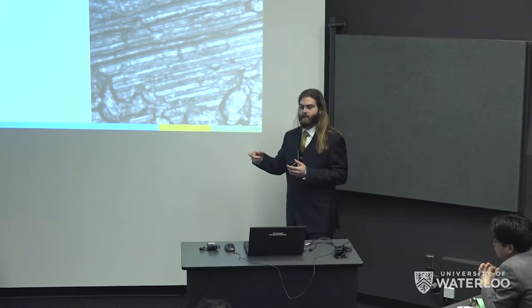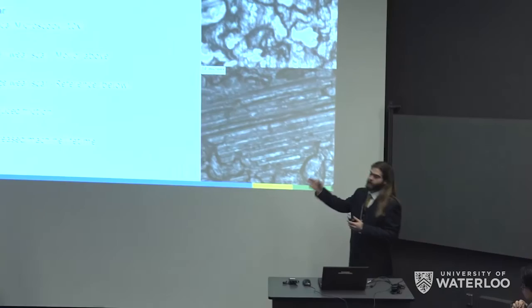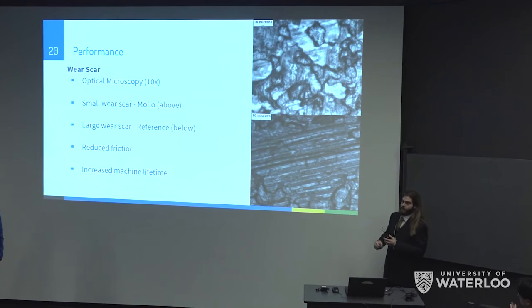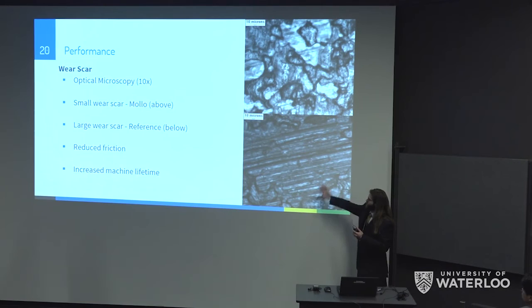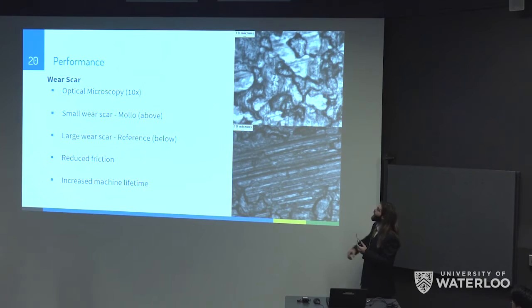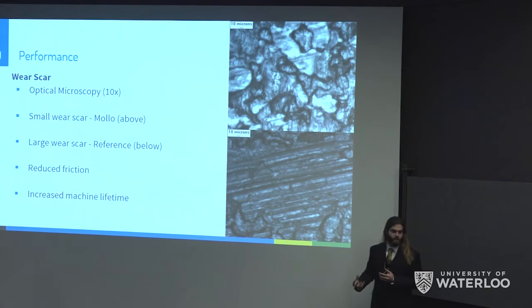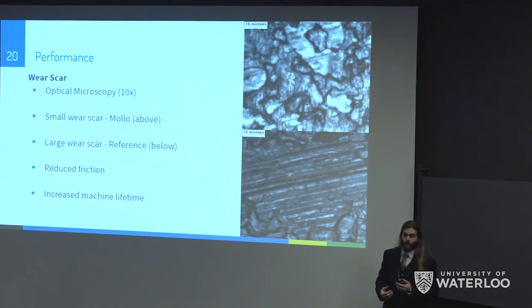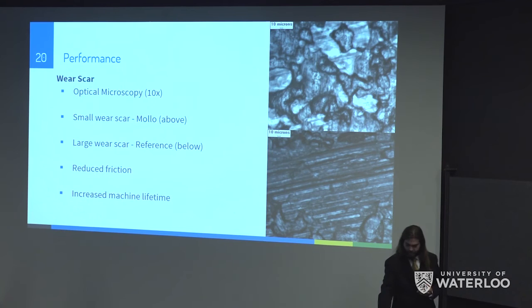After testing, we examined the steel plate wear scars both visually and under optical microscopy at 10× magnification. The top plate used MALDO 5 as a lubricant while the bottom is the reference. On the reference plate, there are many horizontal scrapings where the die wore down the surface, whereas on our sample there are almost no horizontal scrapings — just the natural unevenness of the metal surface — showing our product preserved the metal's original state. This demonstrates that MALDO reduces coefficient of friction and wear, extending machine lifetime.